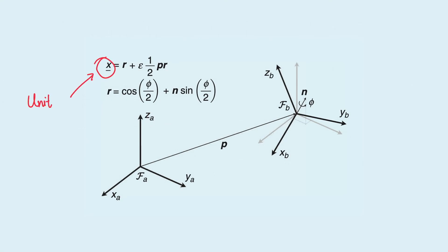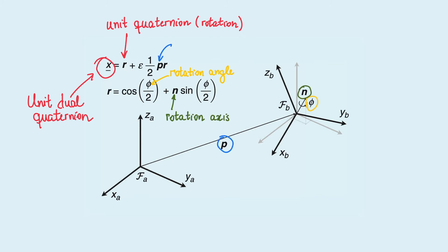Unit dual quaternions represent rigid motions. The primary part contains a unit quaternion, which represents a rotation, where phi is the rotation angle around the rotation axis N. In the dual part, phi is a pure quaternion that represents the translation.